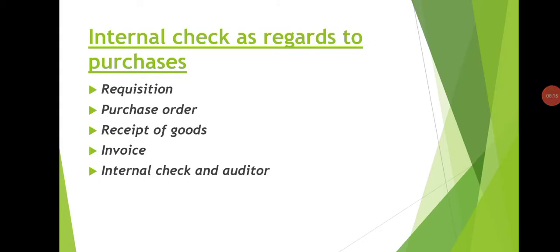The next topic is internal check as regards to purchases. For efficient working of the purchase department, its activities should be divided into requisition, purchase order, receipt of goods, invoice, and internal check and auditor. For requisition, a requisition book must be kept by each department. The department requiring goods must prepare a requisition slip in duplicate, clearly mentioning quality, quantity, and the time by which goods must be supplied, and send it to the purchase department.